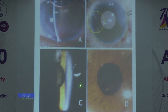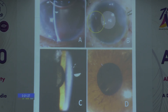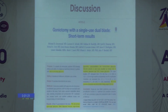Complications observed included hyphema in 13 eyes, of which 3 required anterior chamber wash post-operatively; one recurred but settled on its own. Three eyes developed posterior capsule opacification by 6 months requiring a YAG capsulotomy, and one eye had an IOP spike requiring anti-glaucoma medications immediately post-operatively. No other major complications were seen.